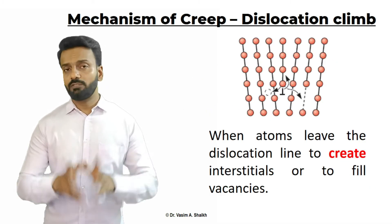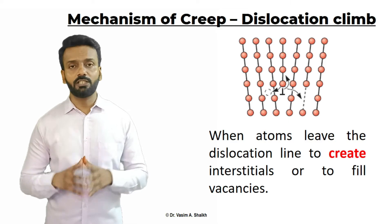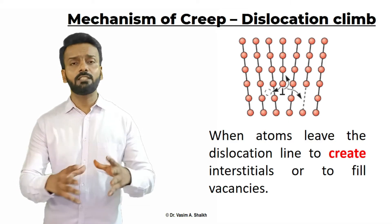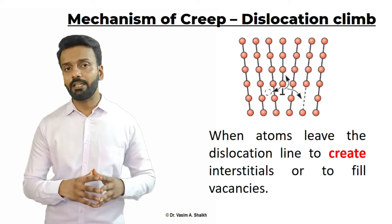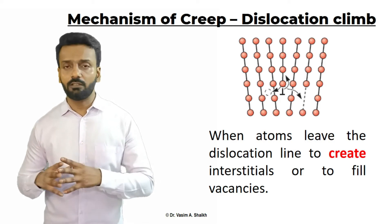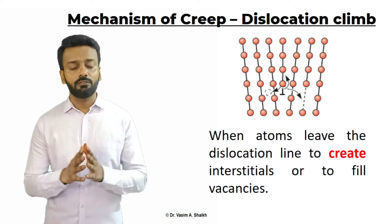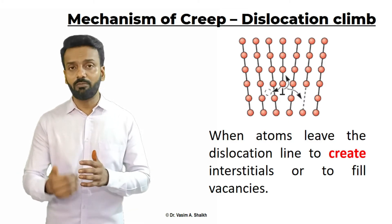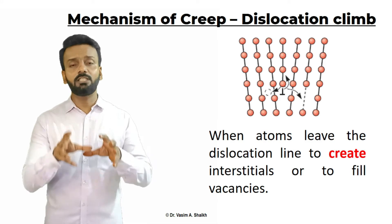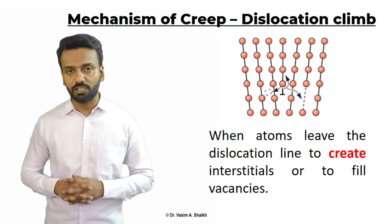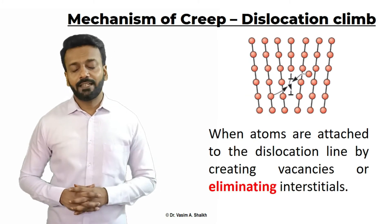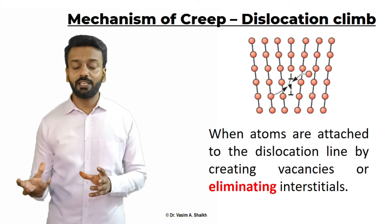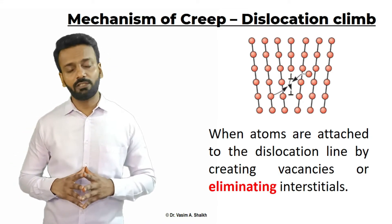Here in this image, we can see an edge dislocation and the atom is moving away from the edge dislocation — it is either going to an interstitial site or it is going to fill a vacancy. We can see that the dislocation appears to be climbing down when these atoms move out of the dislocation line. The second thing that can happen in dislocation climb is that atoms can join the dislocation line, either creating some vacancy or eliminating some interstitial sites.